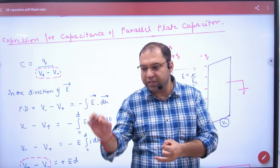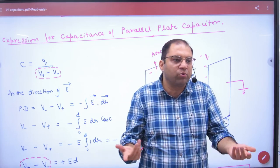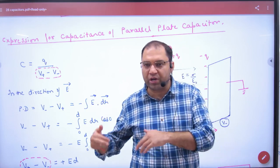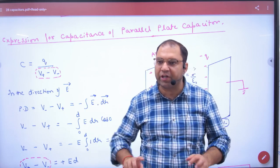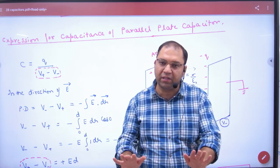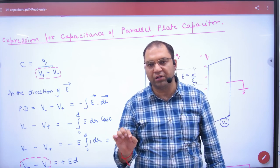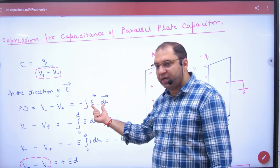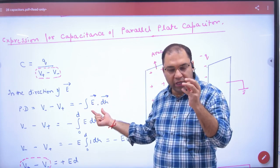Work done in carrying a charge relates to potential difference. The third method is the last method: V = -∫E·dr. This is the potential difference, the third definition. In this formula, when we find potential difference...